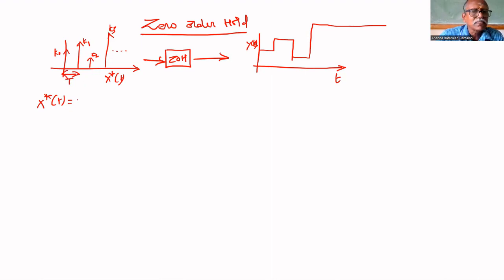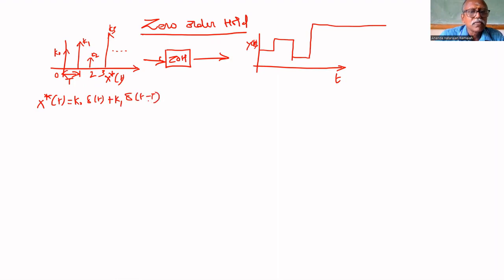Therefore, this can be written as: K naught delta of T plus K1 delta of T minus T plus K2 delta of T minus 2T, plus etc.